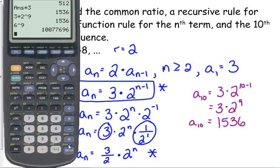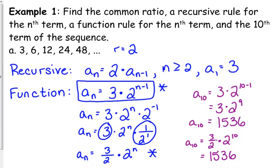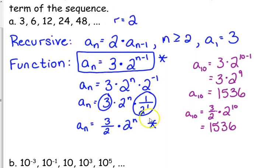If we plugged it into the bottom one, we would get the same answer. 3 over 2 times 2 to the 10th gives us the same answer, 1,536. So they are the same rule, just written slightly differently.